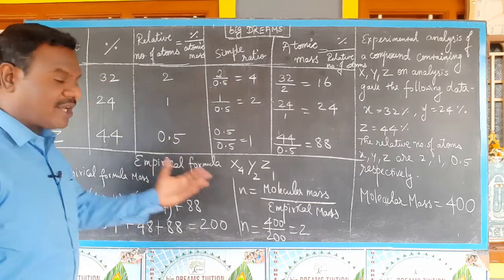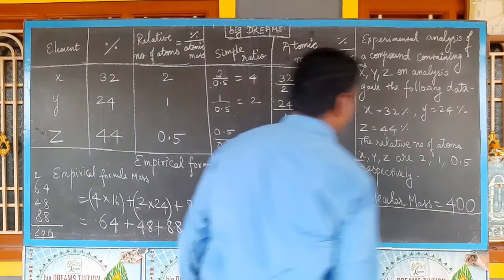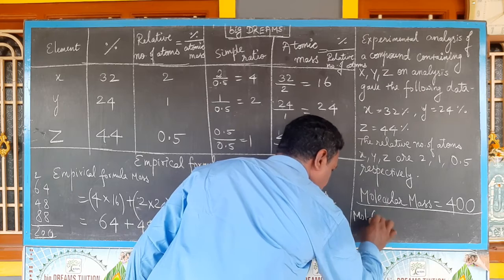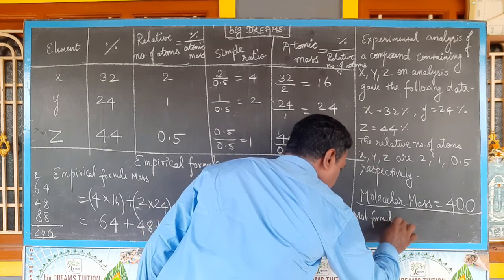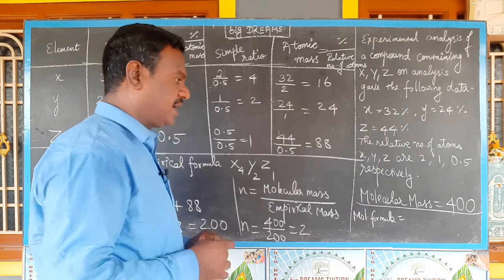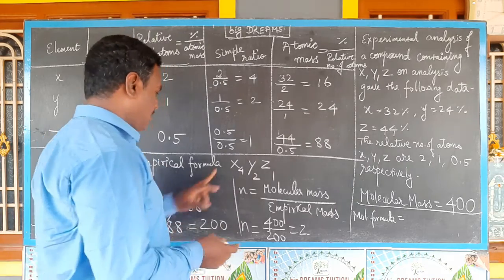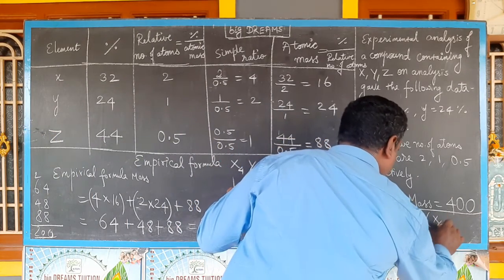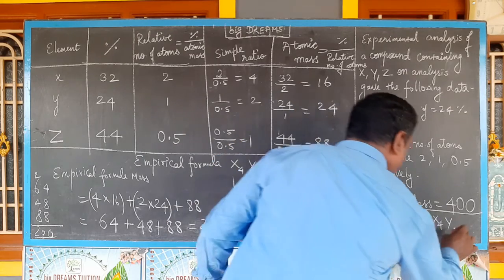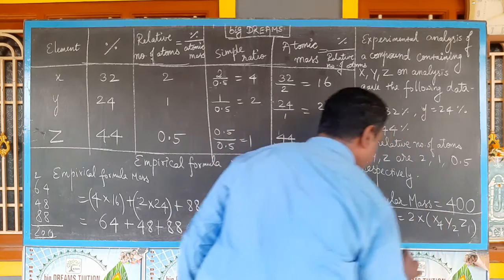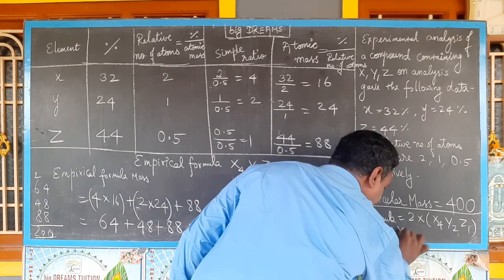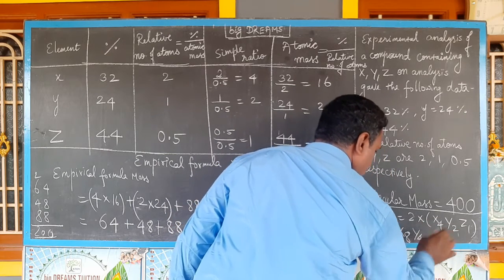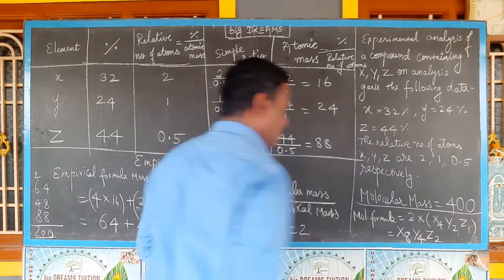Molecular formula equals n times empirical formula. With n = 2 and empirical formula X₄Y₂Z₁, the molecular formula is X₈Y₄Z₂. Thank you.